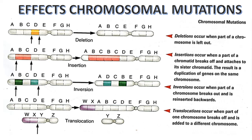In cases where the zygote develops, the mature organism is often sterile and thus incapable of producing offspring. The most important of these chromosomal mutations are deletions, insertions, inversions, and translocations.